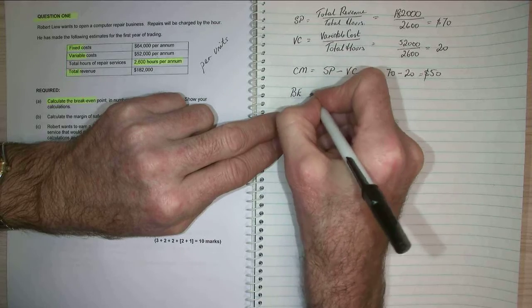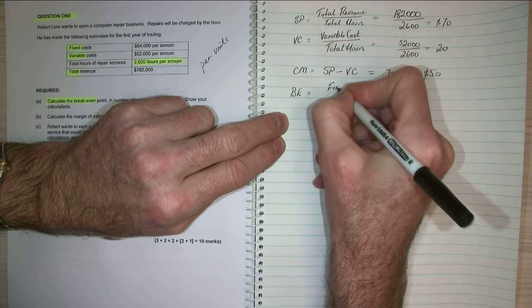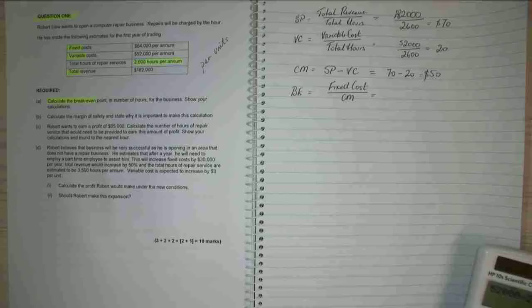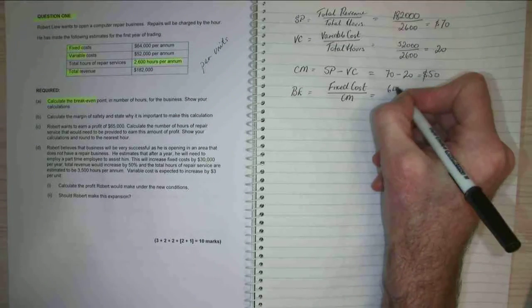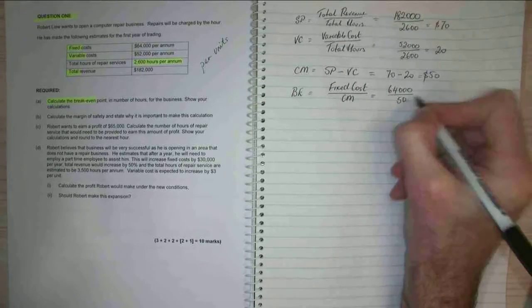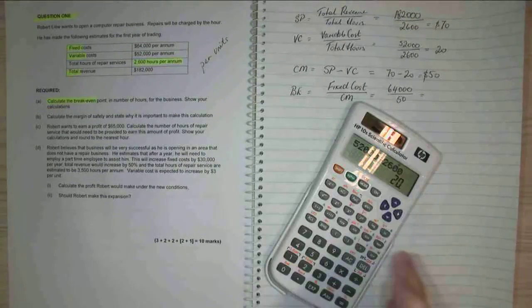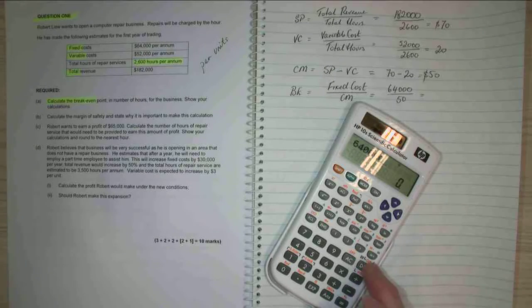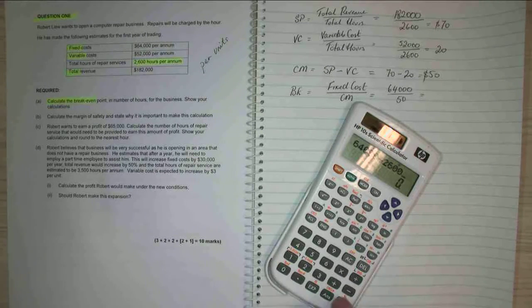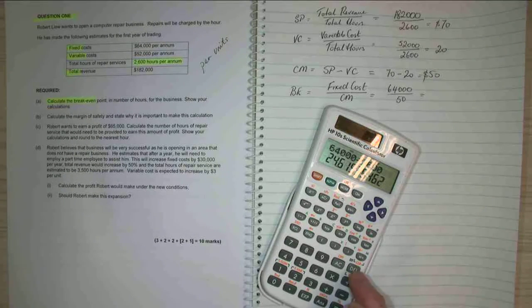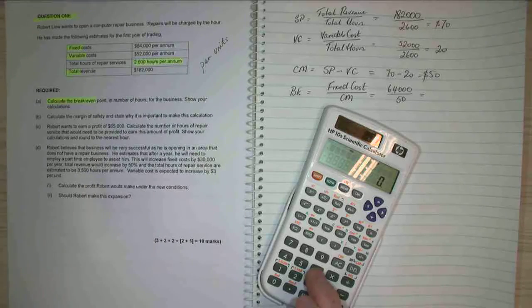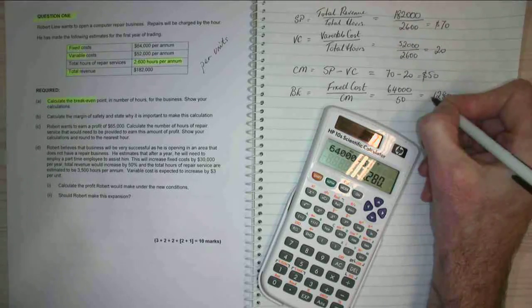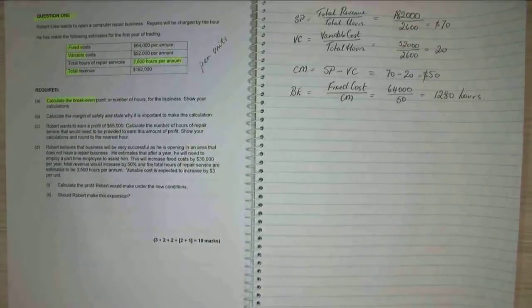Now my break even point equals my fixed cost divided by my contribution margin. And my fixed costs we've worked out to be $64,000 divided by my contribution margin of 50, which we just calculated. So I've got 64 divided by 50, that's right, 1,280 hours. So that's my break even point. That's question A done.